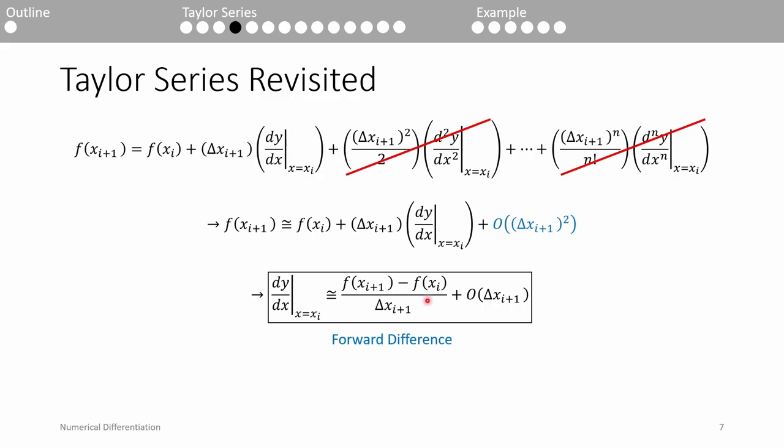This is because this term technically contains a zeroth order derivative, aka no derivative, attached to it. The important point is that the truncation error of the forward difference is proportional to the step size between the current and the future point. If you cut the step size in half, the truncation error will also be cut approximately in half. But if you double the distance between the points, the truncation error will about double as well.